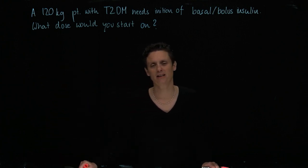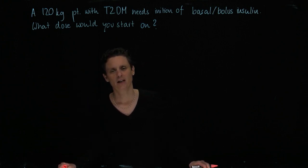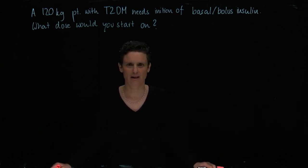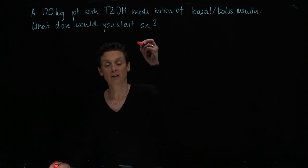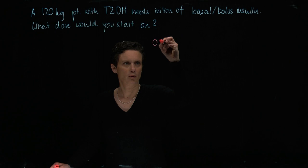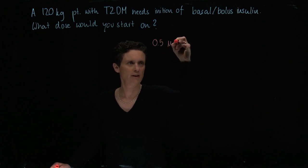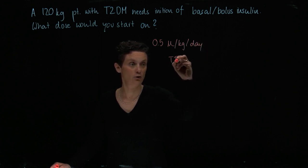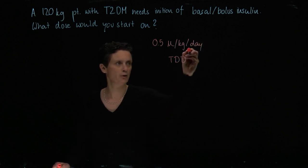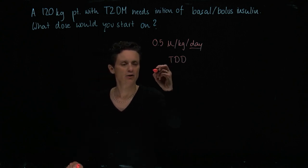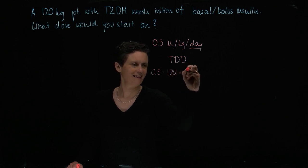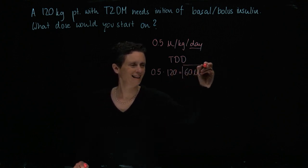I just want to make some basic calculations to help you figure out an initial dose of an insulin regimen. It's fairly straightforward. For type 2 diabetes, we usually start on 0.5 units per kilogram per day. That's going to be the total daily dose, or TDD. So let's put the numbers in: 0.5 times 120 equals 60 units. So that's our total daily dose.